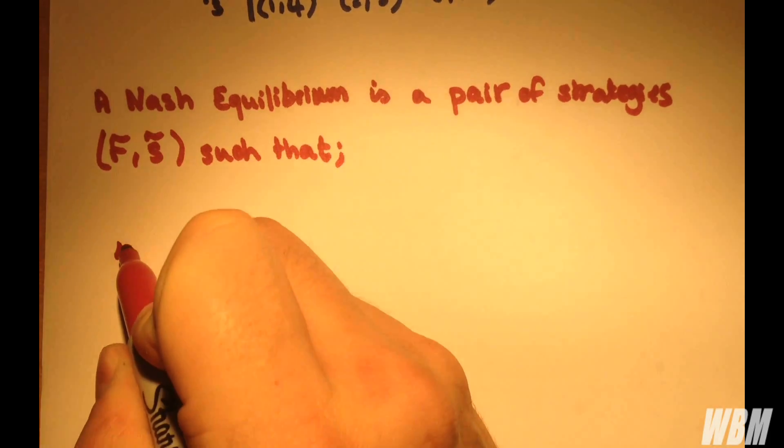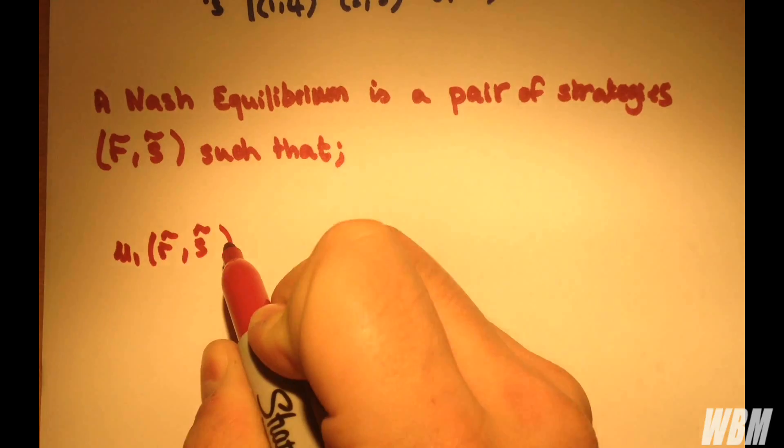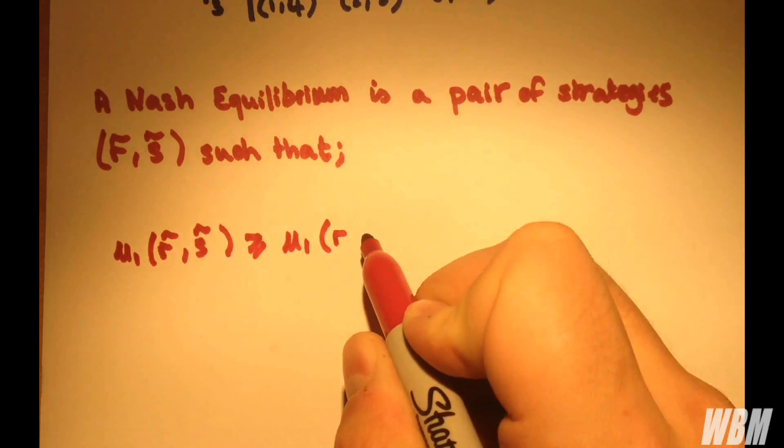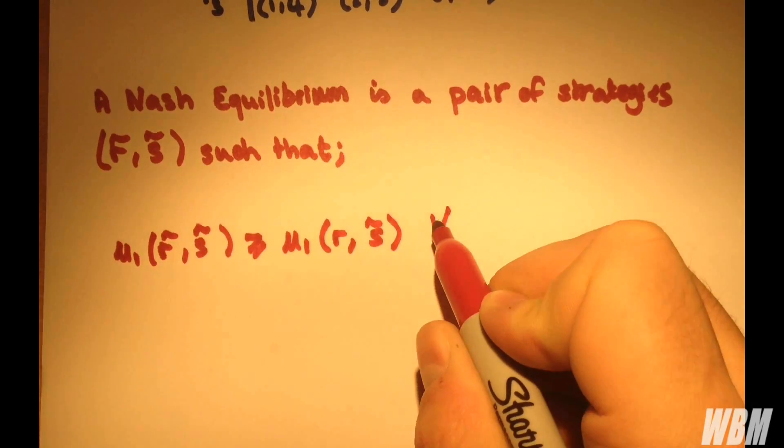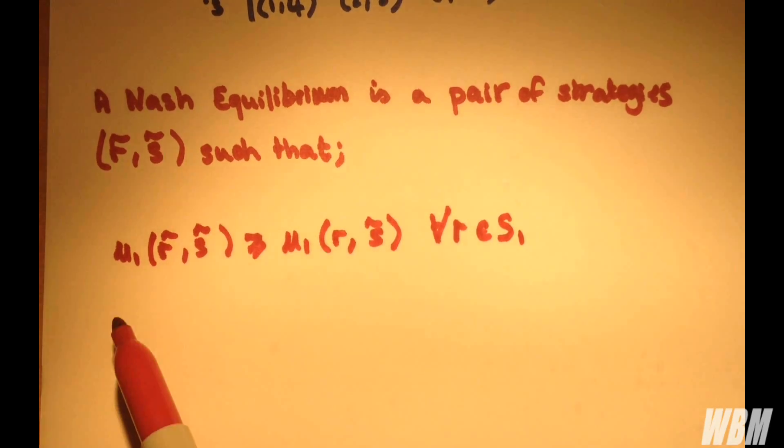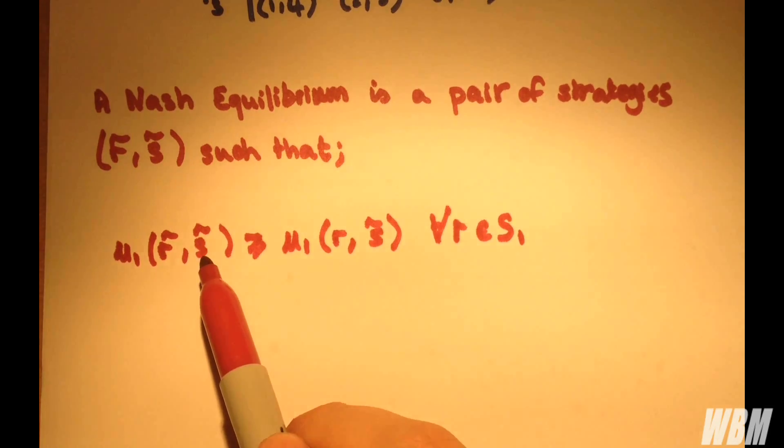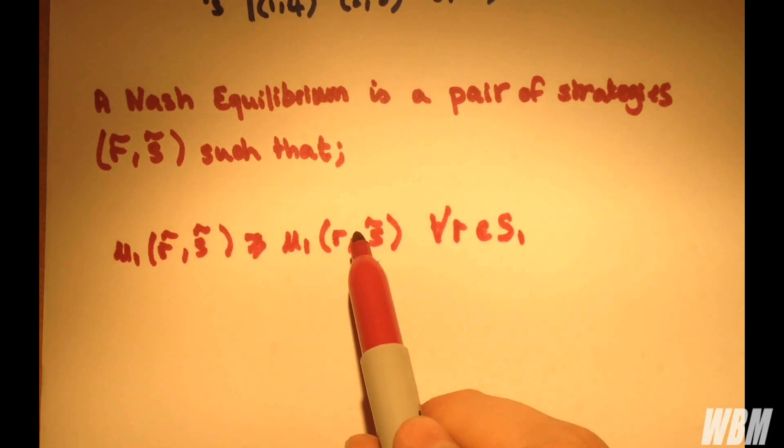So, such that for utility 1, R and S are greater than utility 1 for a separate value of R and the same value of S for every R in strategy set 1. So, all we're saying is that for this point with a fixed strategy S, R is greater than any other choice of R. So, that's straightforward.